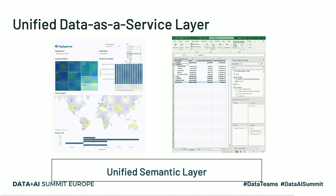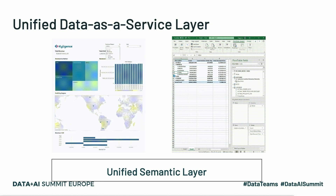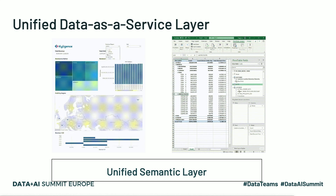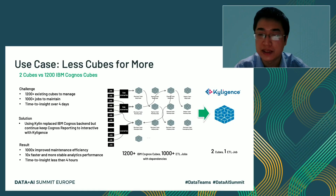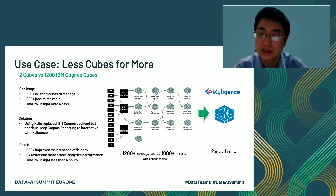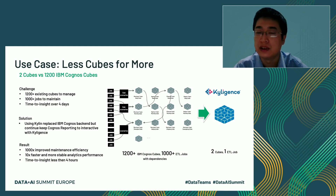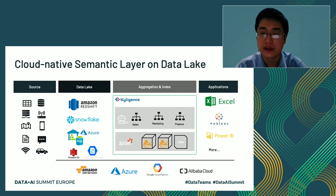So let's talk about the expectations of the customer we mentioned at the beginning. What they want is a unified, flexible, high-performance data-as-a-service platform — and now they have one with Apache Kylin on cloud. We've also seen a user replace IBM Cognos cubes with Kylin: more than 1,200 IBM Cognos cubes were replaced with just two Kylin cubes, achieving more than 1,000 times improvement in maintenance efficiency and 10 times faster and more stable performance.